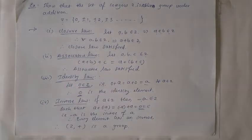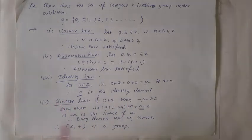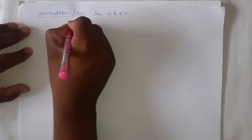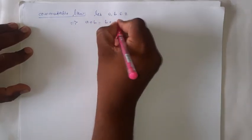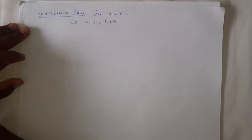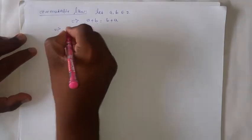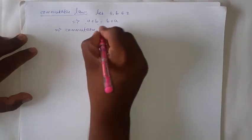By considering all these four properties, we can say that (Z, +) is a group. Now let us prove whether it is an Abelian group or not. Along with these four properties, we need to satisfy the Commutative law. To prove the Commutative law, let a, b belong to Z. Then a + b is equal to b + a, because we know that addition follows the commutative law. Therefore, the Commutative law is satisfied.